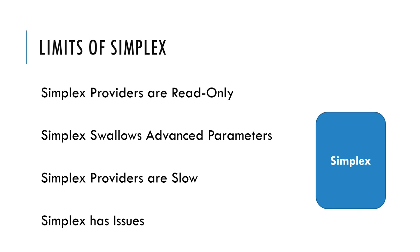Most of these limitations are incidental rather than intrinsic. The slowness I think I could speed up, but there's a lot of indirection. I could expose the advanced parameters; I just haven't figured out a clean way to do that without being overwhelming. On the read-only issue, Oshin and I are talking about how to make write support happen — we've exchanged some really good ideas about that.